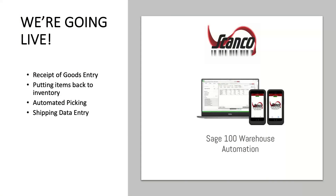I moved through those slides quickly because I want to get to the exciting part — the demo. Before we go, I want to talk about the four main transactions we're going to cover: one, receive a goods entry; two, how we put items into inventory after receiving them; three, how we pick; and four, how we ship. That's why I named this the life cycle of a product — from the time it comes in to the time it goes out, we're going to automate that and show you how.